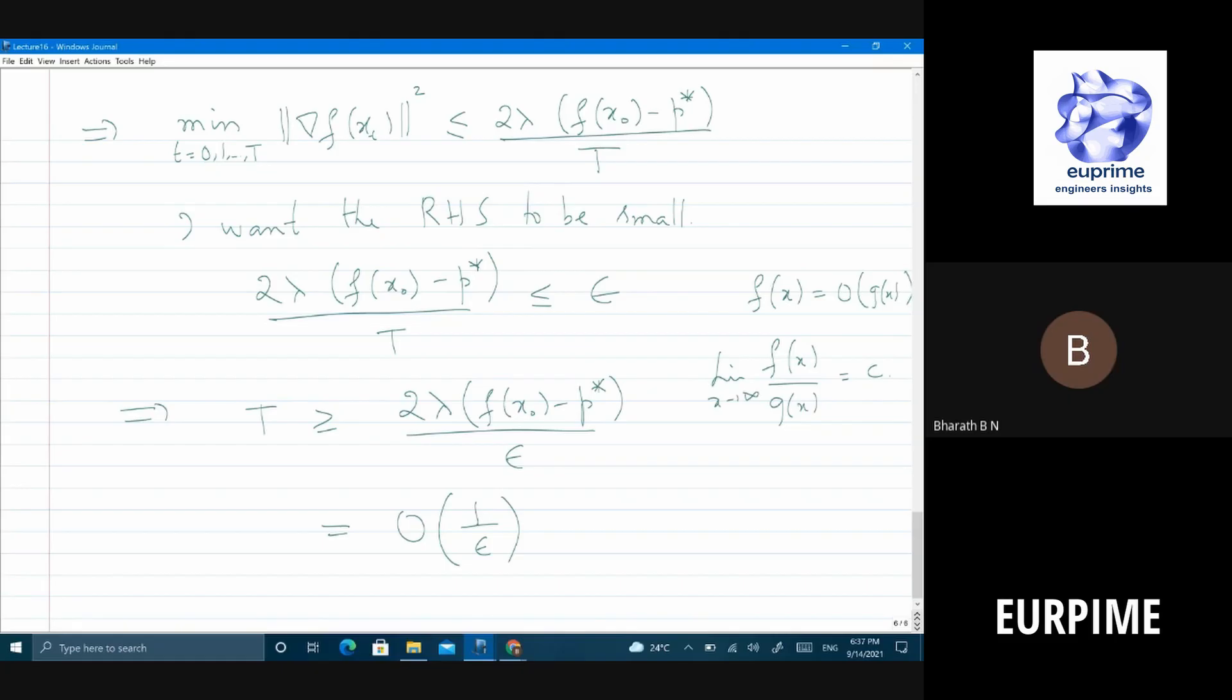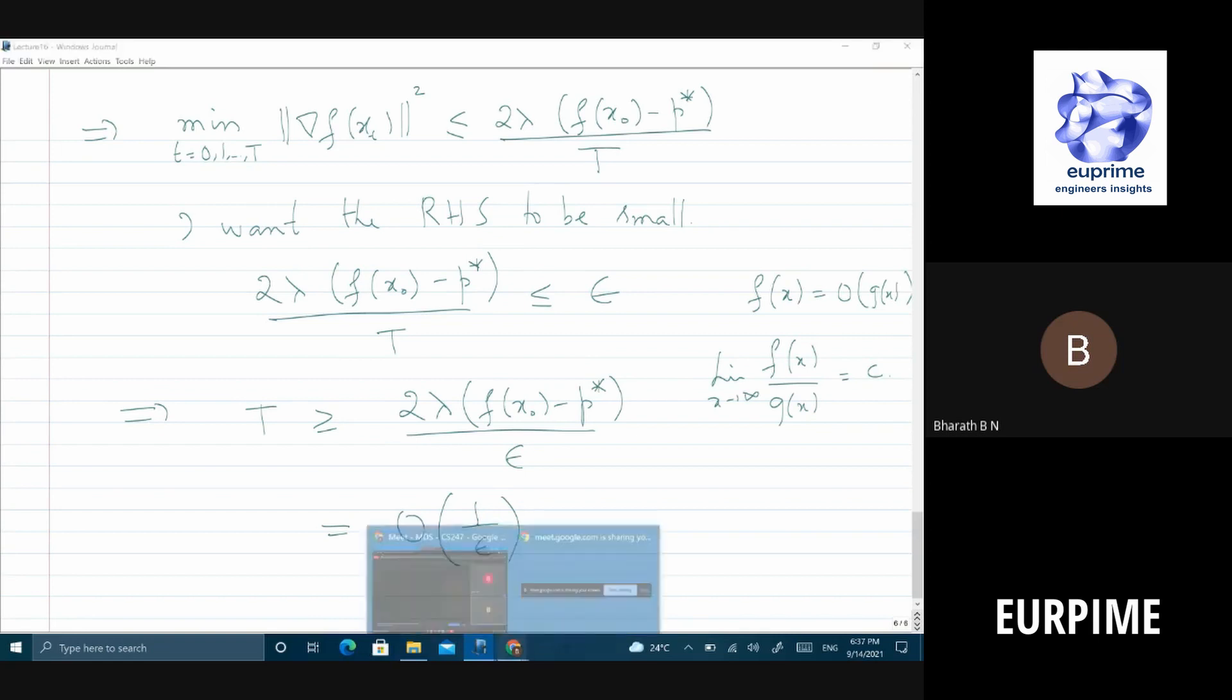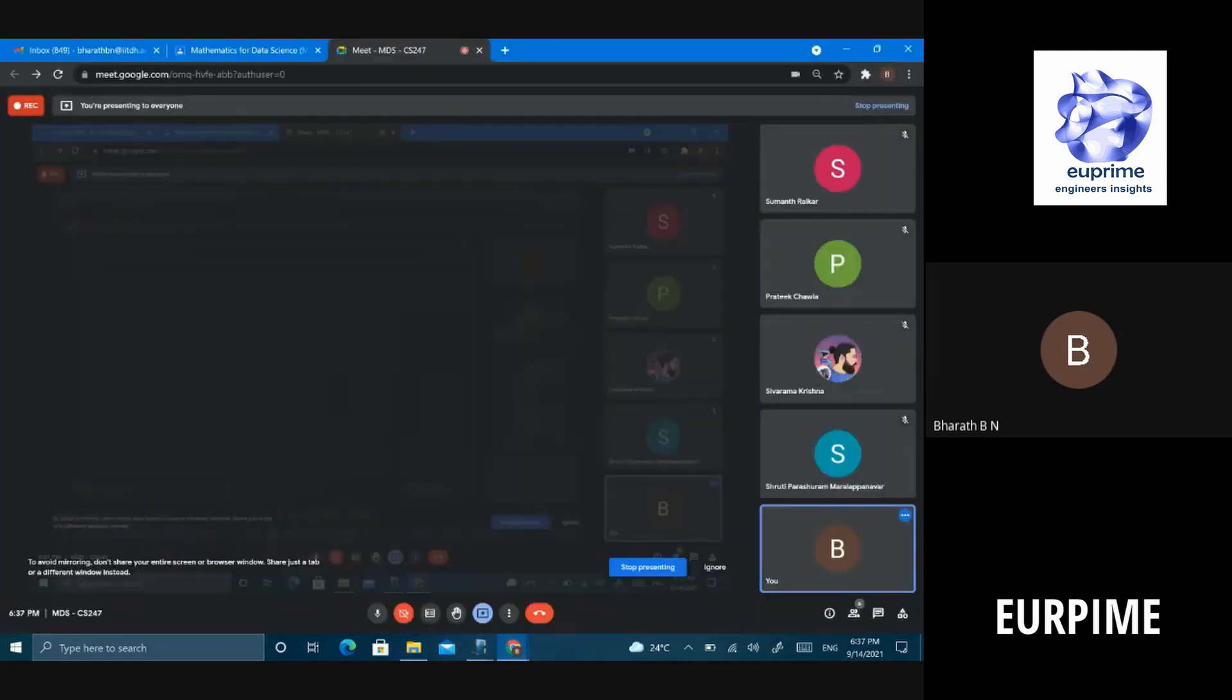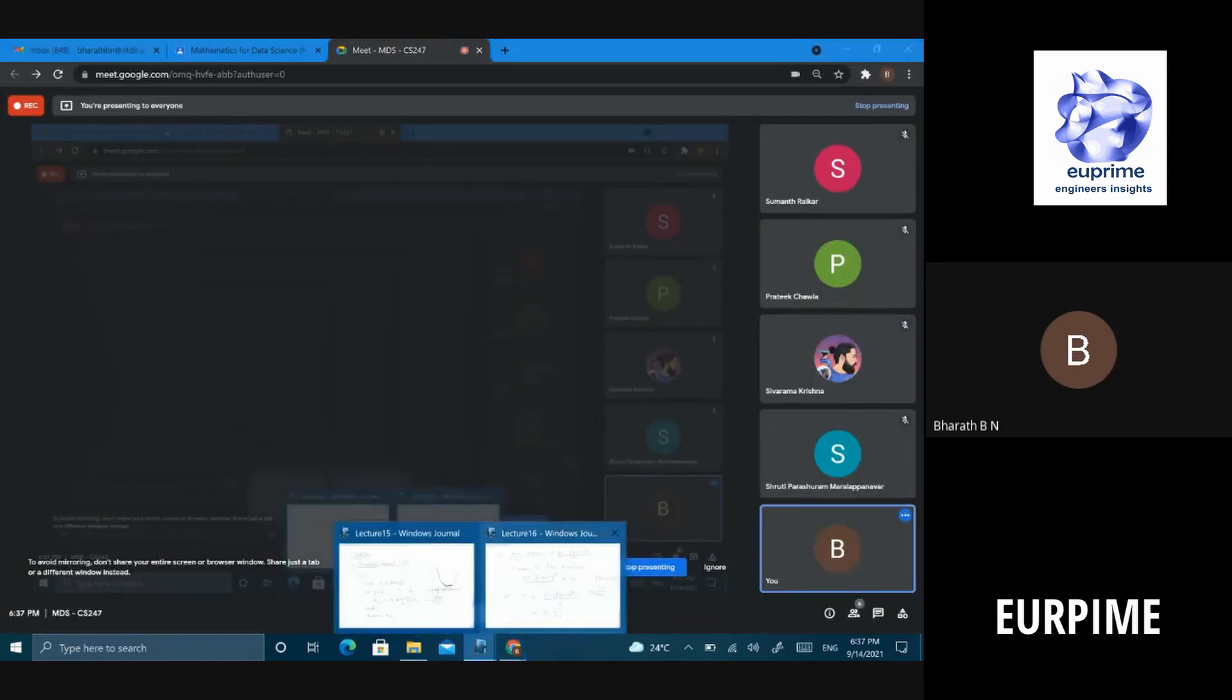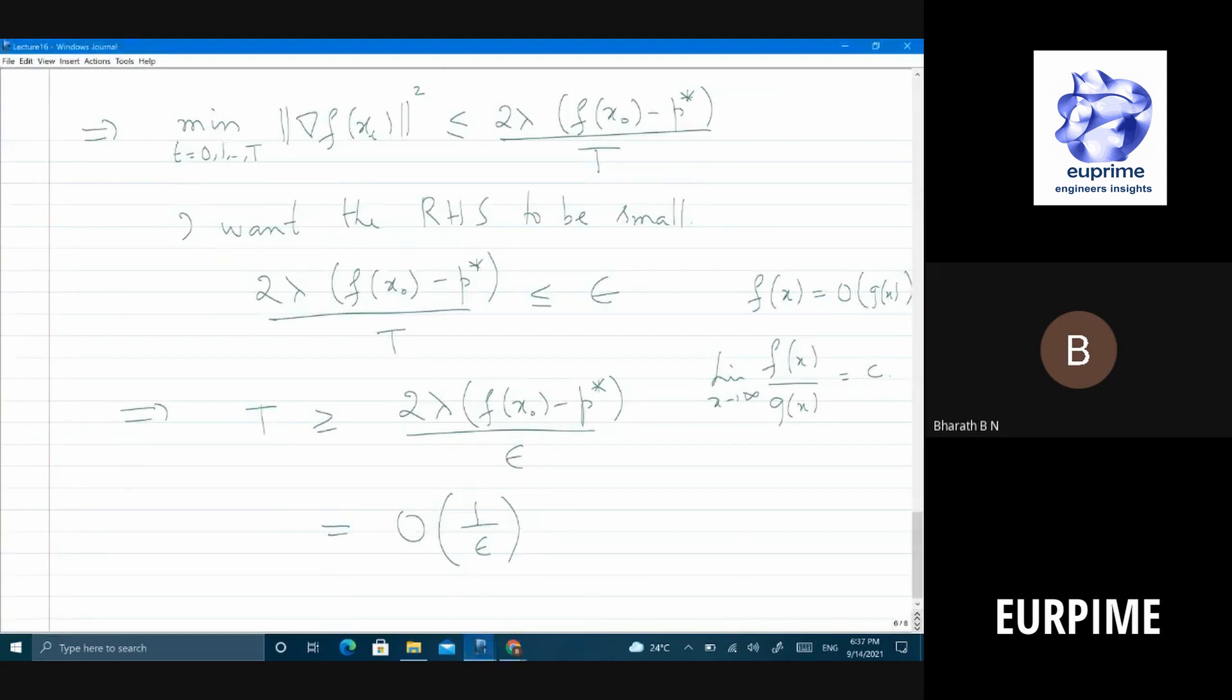That is what it says - see minimum. So I would know at each point what is the gradient. The gradient at some point should be less than epsilon, so this guarantees that my algorithm will stop. Is that fine? Any questions, those who are online?